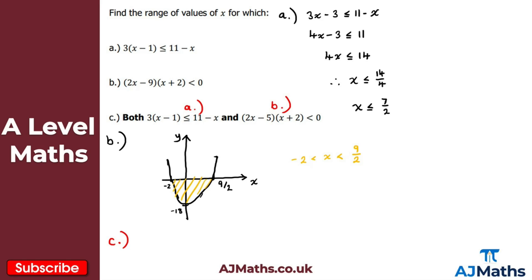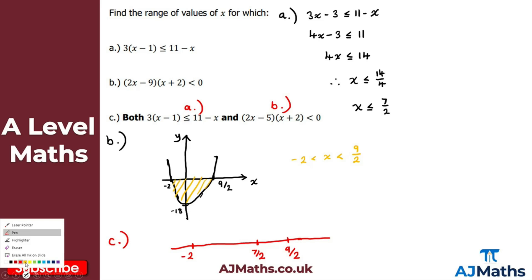The easiest way to think about this is to draw a number line. From part b we have -2 < x < 9/2, and from part a we have x ≤ 7/2. Placing -2, 7/2, and 9/2 on the number line lets us visually represent what's going on.